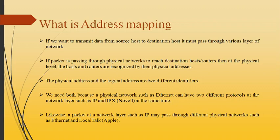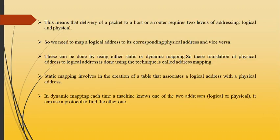Likewise, a packet at the network layer such as IP may pass through different physical networks such as Ethernet and LocalTalk. This means that delivery of packets to a host or router requires two levels of addressing, that is logical and physical. So we need to map a logical address to its corresponding physical address and vice versa. This can be done by using either static or dynamic mapping. Static mapping involves the creation of a table that associates a logical address with the physical address. In dynamic mapping, each time a machine knows one of the two addresses — logical or physical — it can use a protocol to find the other one.